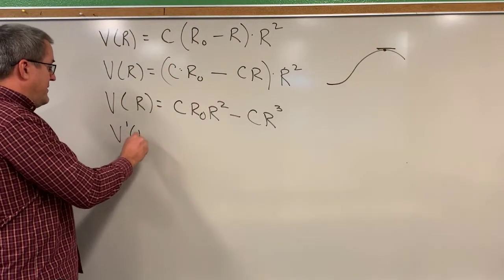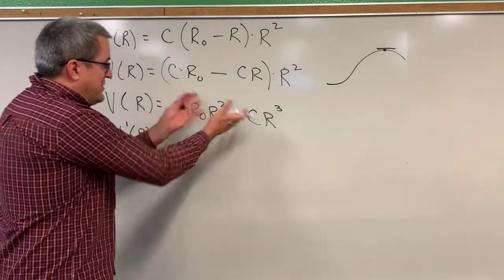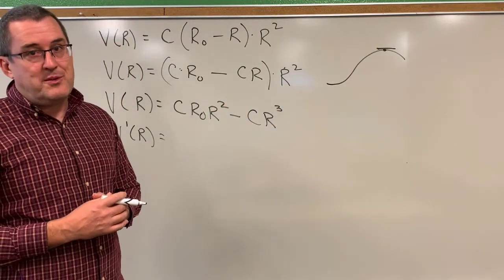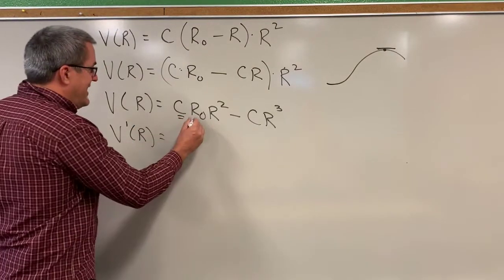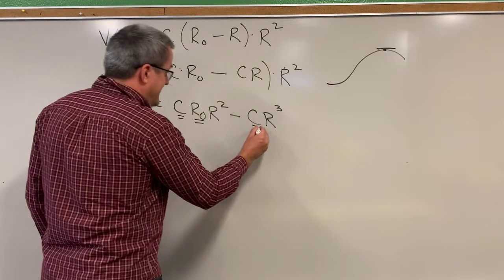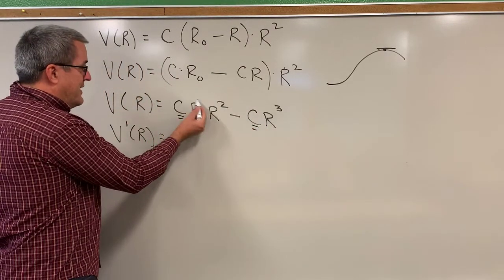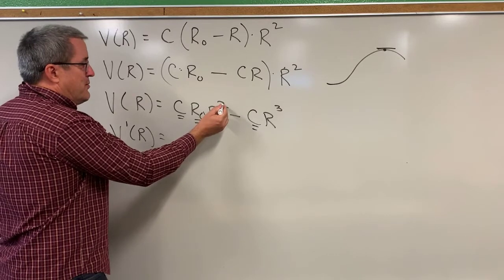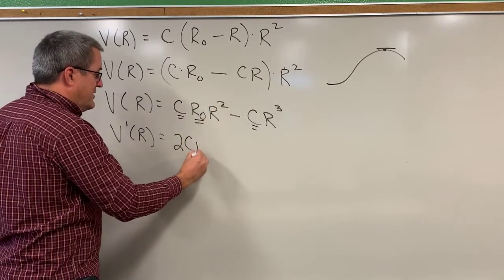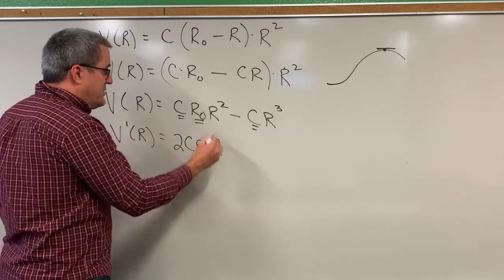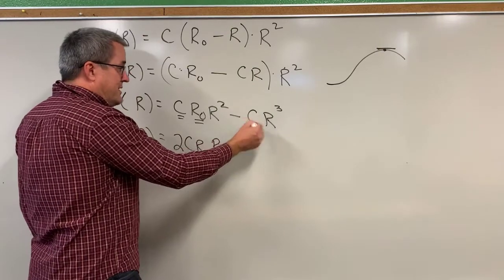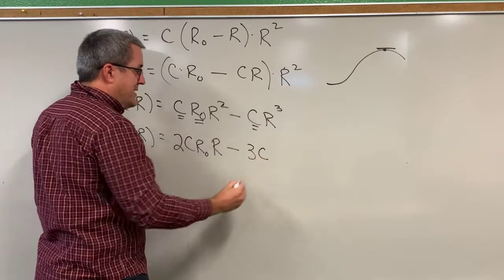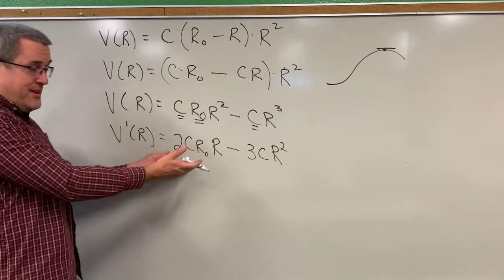Let's begin by taking the derivative. We have two terms: R squared and R cubed. We're going to take the derivative using the power rule. Keep in mind that C is a constant and R sub zero is a constant, so CR sub zero is just a constant multiplier. When we take the derivative, the two drops out front and we get 2 times CR sub zero, reducing the power by one. Likewise, for the second term, the three comes out front, gets multiplied by C, and then the power decreases by one, giving us minus 3CR squared. So the derivative is 2CR sub zero R minus 3CR squared.